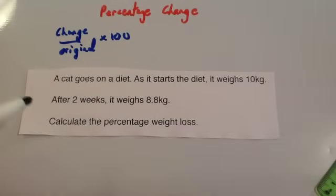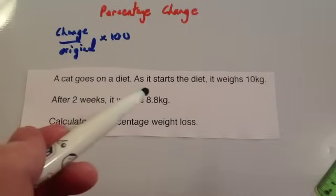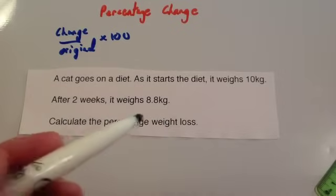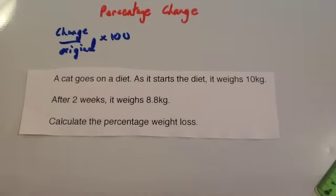So here's the typical question. A cat goes on a diet. As it starts the diet it weighs 10 kilograms. After 2 weeks it weighs 8.8 kilograms. Calculate the percentage weight loss.